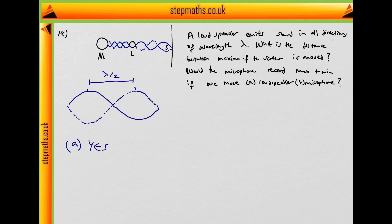Let's clarify that briefly: as the loudspeaker moves across, the relative phase of the standing wave produced as it reaches the loudspeaker changes. Thus, the phase difference between the waves produced by the loudspeaker and the reflected wave interfering with it changes. And so we're going to have maxima or minima recorded.